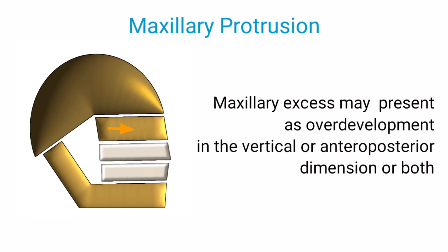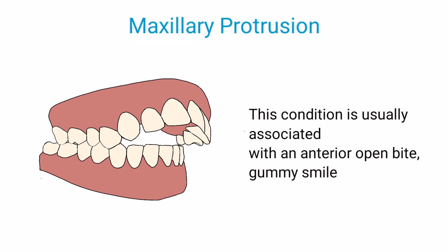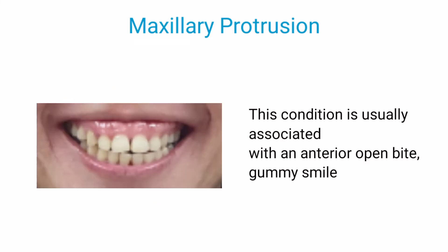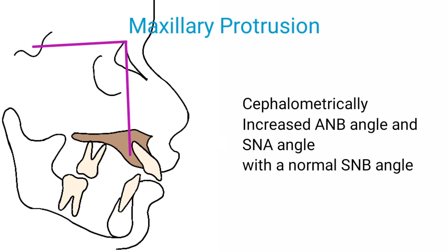Maxillary excess may present as overdevelopment in the vertical or anterior-posterior dimension or both. This condition is usually associated with an anterior open bite and gummy smile. Cephalometric shows an increased ANB angle and SNA angle with a normal SNB angle.